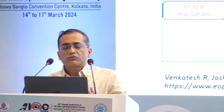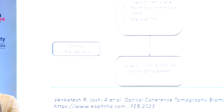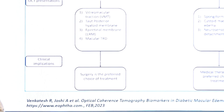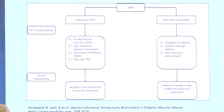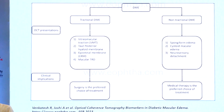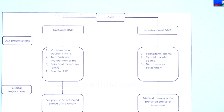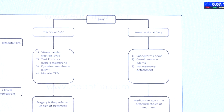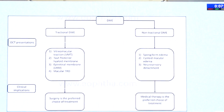For tractional DME we can have VMT (vitreomacular traction), posterior hyaloid, epiretinal membrane, and macular tractional detachment, which needs surgery. For non-tractional DME there are spongiform edema, cystoid macular edema, and neurosensory detachment, for which medical therapy is the choice.